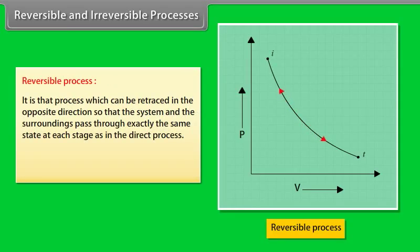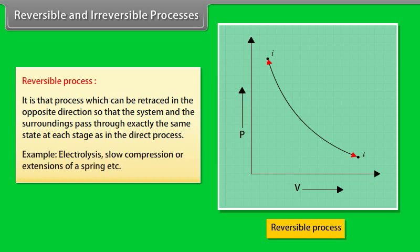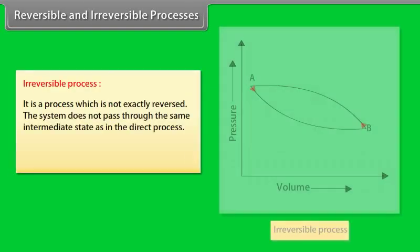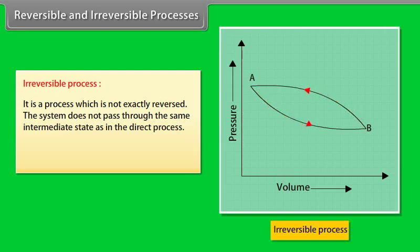Reversible and irreversible processes. Reversible process: a process which can be retraced in the opposite direction so that the system and surroundings pass through exactly the same states at each stage as in the direct process. Electrolysis and slow compression or extension of a spring are examples of reversible processes. Irreversible process: a process which cannot be exactly reversed; the system does not pass through the same intermediate states as in the direct process. All chemical reactions and natural processes are examples of irreversible processes.